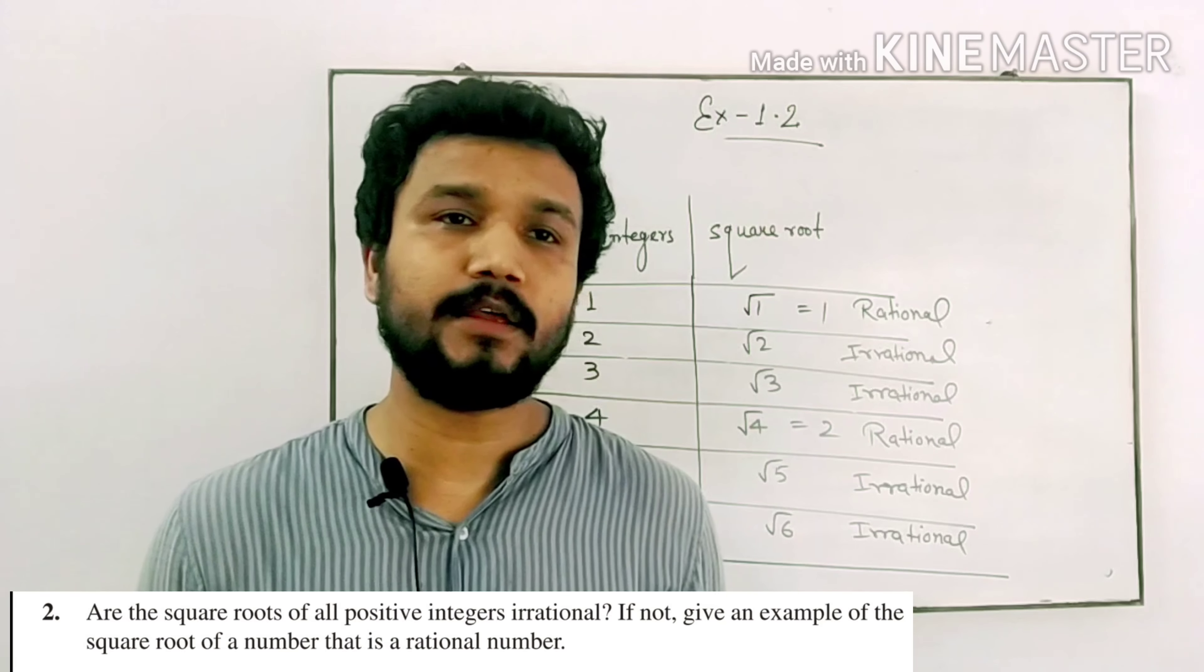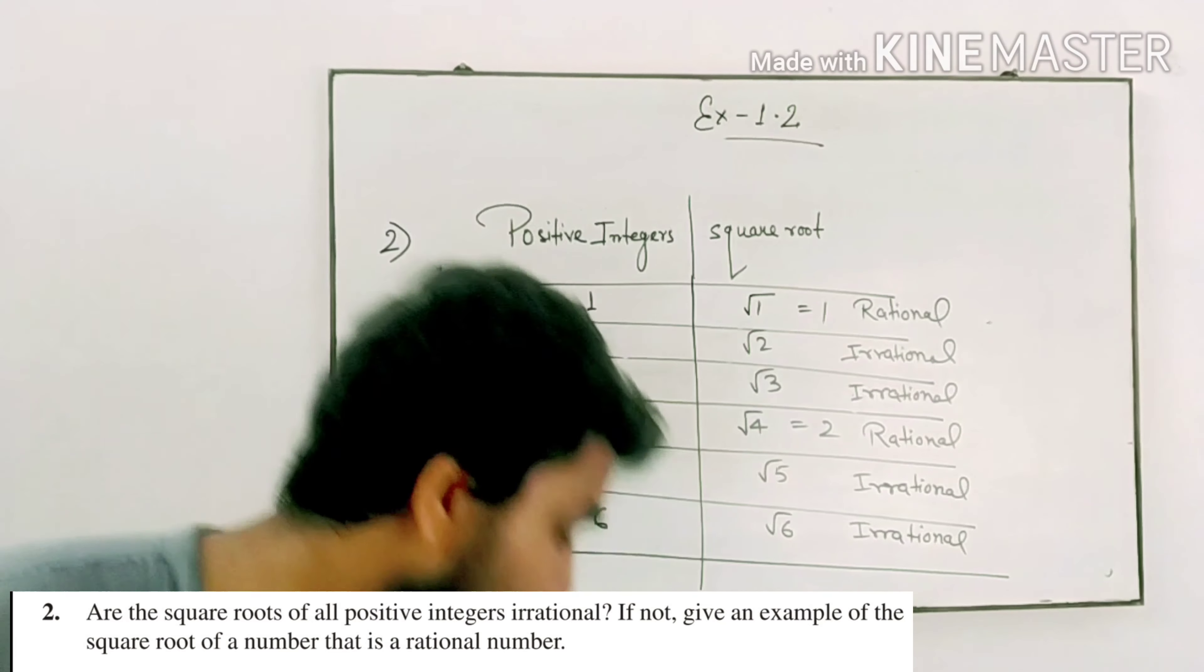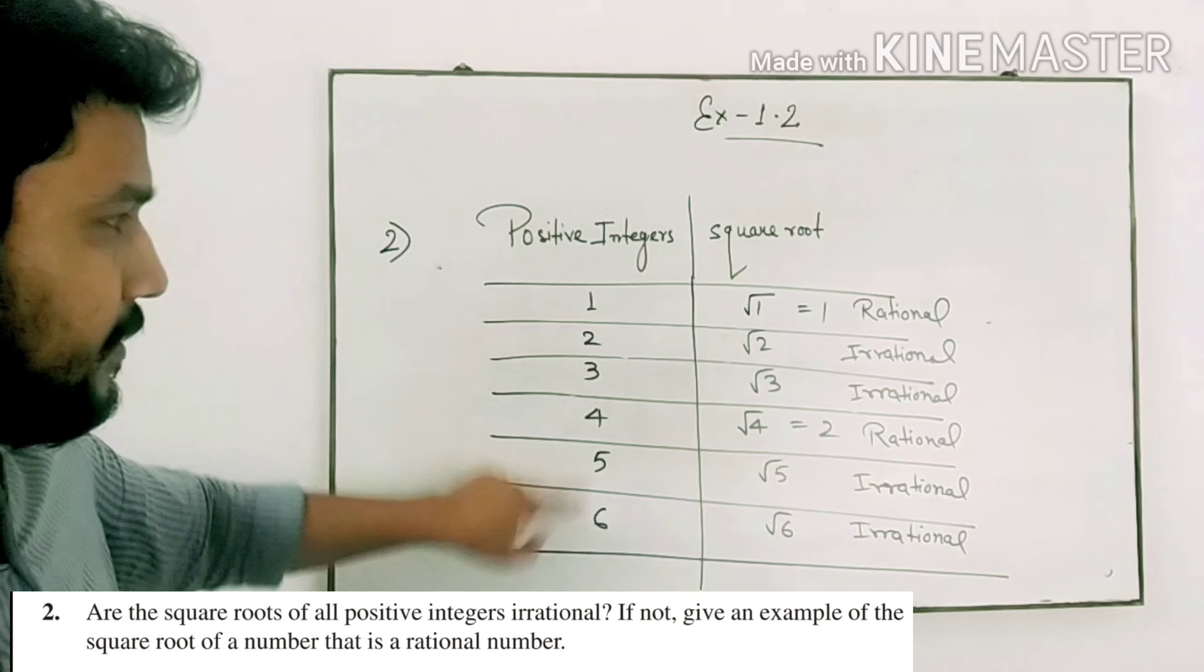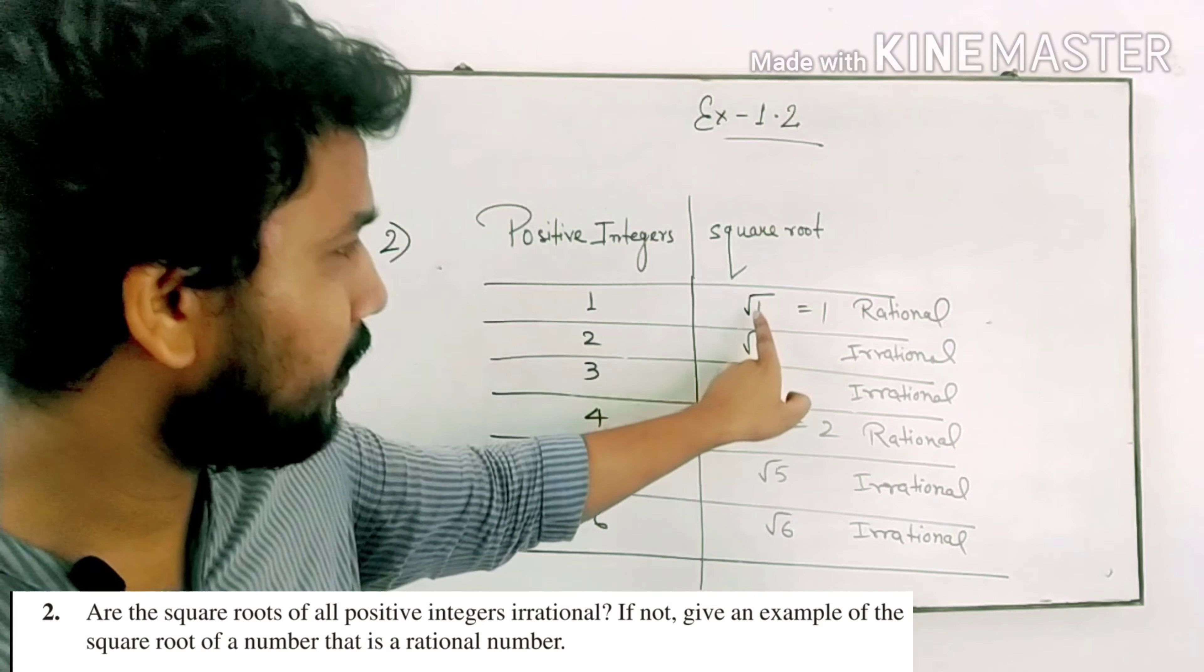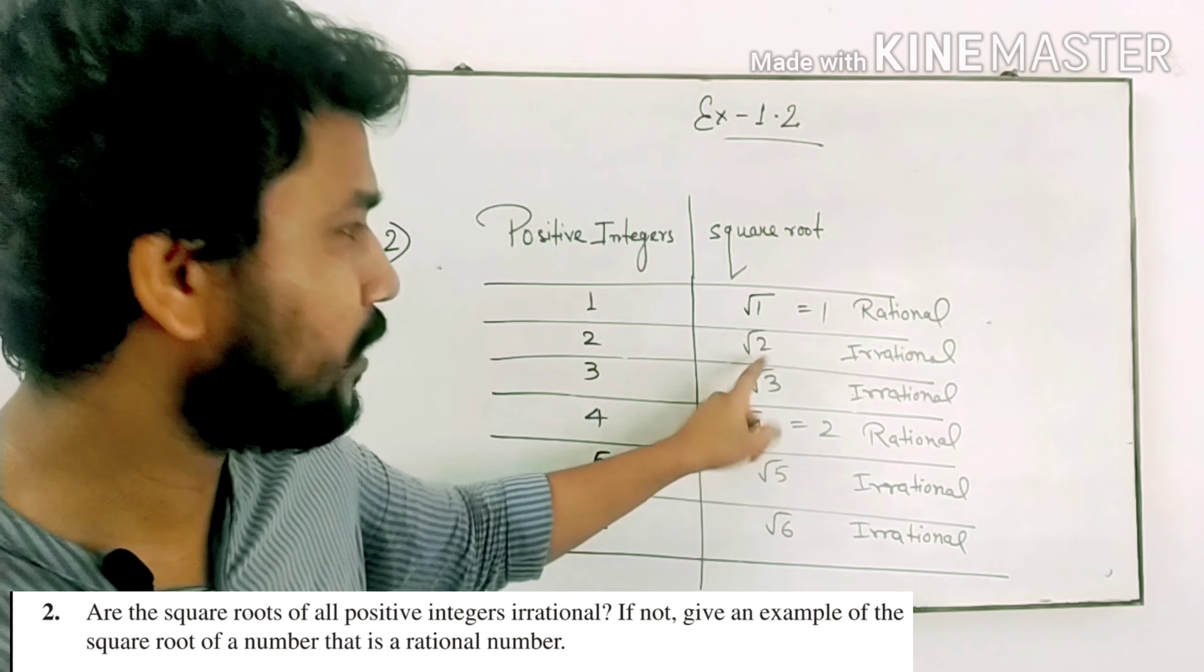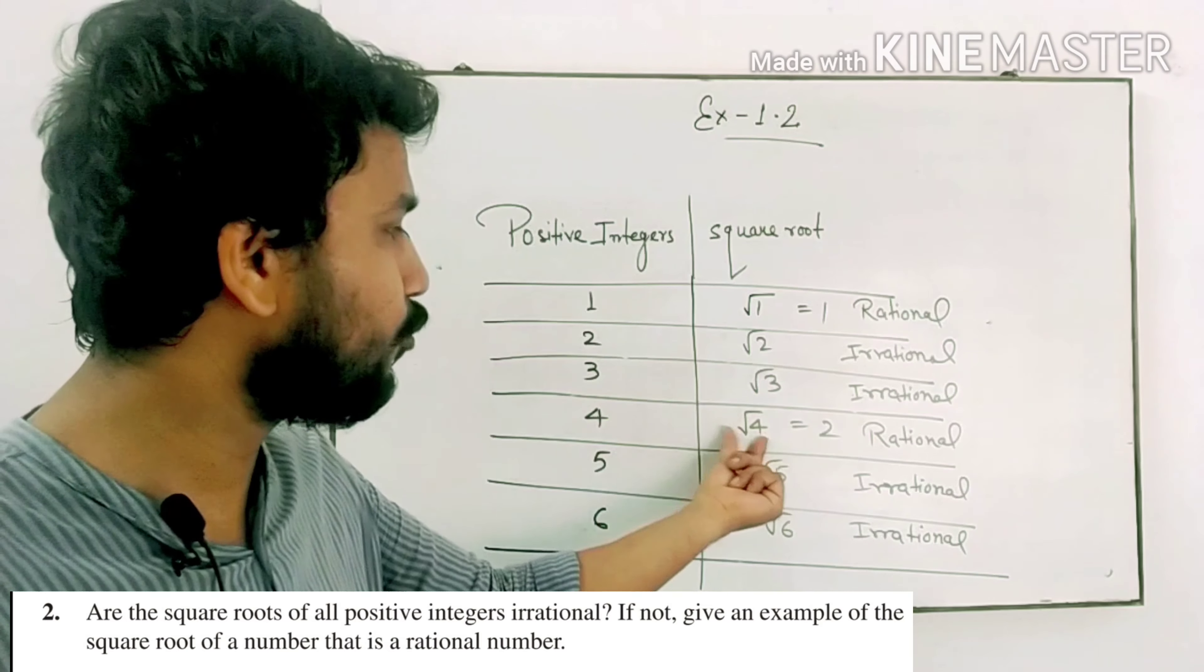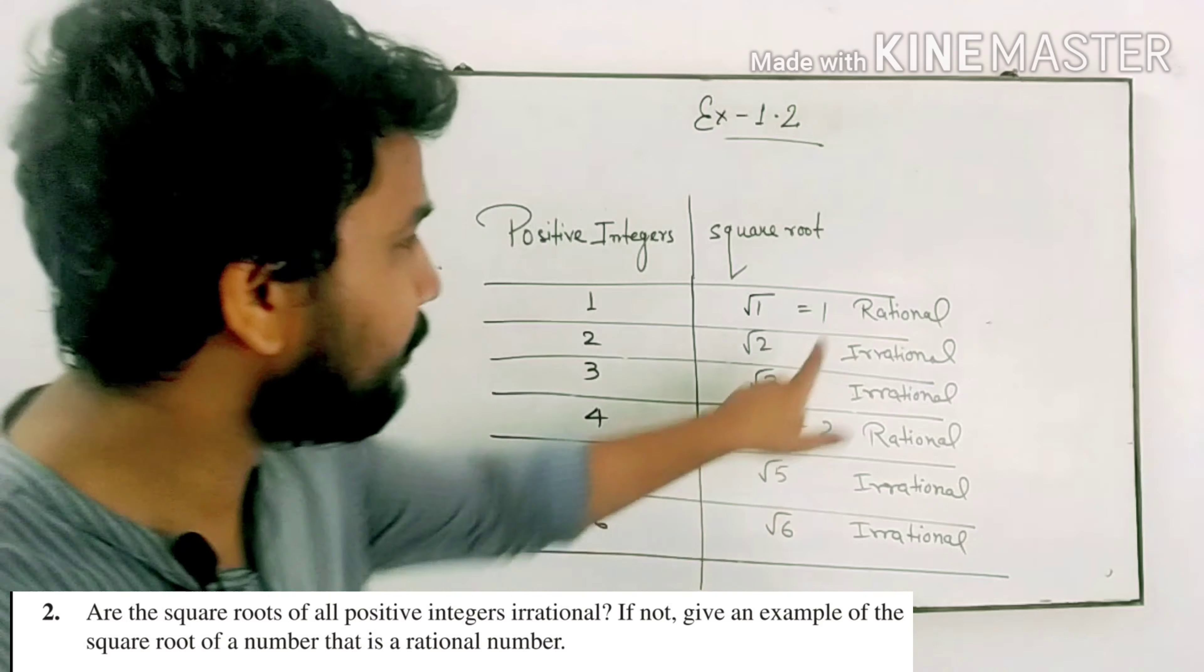Let's see some positive integers: 1, 2, 3, 4, 5, 6. These are some positive integers. With their square roots: root 1, root 2, root 3, root 4, root 5, root 6.